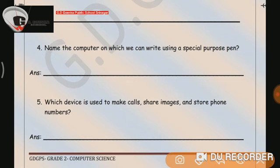Question number 5 is, which device is used to make calls, share images and store phone numbers? Yes, we know that device is smartphone. That is, smartphone. So, dear children, you all have to do this exercise on your book that is on page number 12.